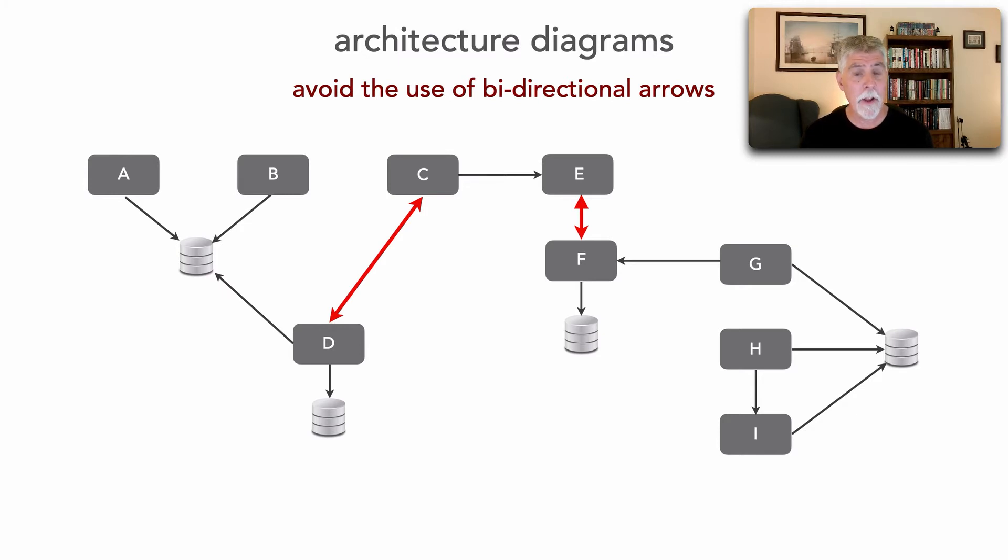And so the point is there is truly bidirectional relationship, but instead of a bidirectional arrow, what my recommendation and practice is, is to actually show that as two arrows to make it clear that there is a request going from C to D and then a request or response going through a different channel from D back over to C at some point in time.